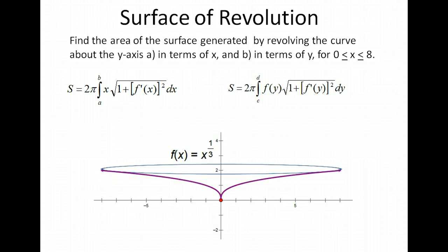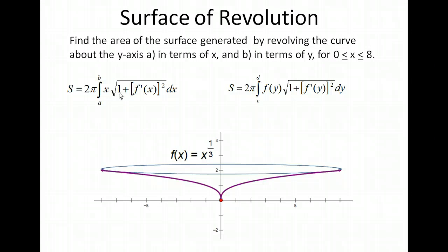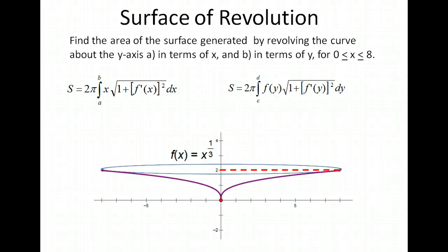We have the function f of x equals x to the one-third. We also have a formula here. In part one of this series, we developed a formula for surface area for a graph that's been revolved about the x-axis. The only difference between that formula and this one is the x here — instead of f of x, we just have x. That's because the radius is now horizontal, so instead of a y value, we have an x value there.